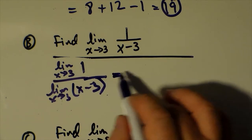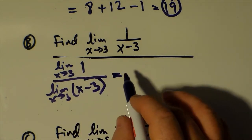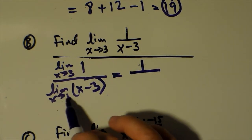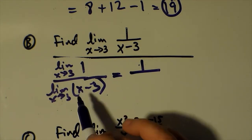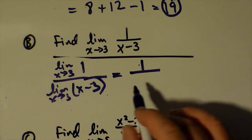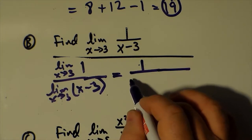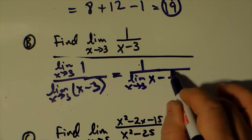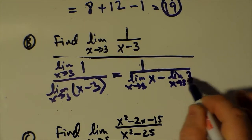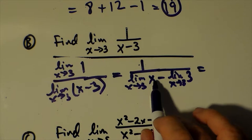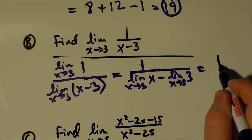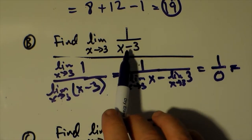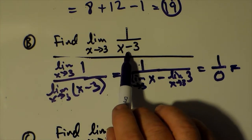The limit of a constant is just the constant regardless of what x is approaching, so the numerator is 1. On the bottom, the limit as x approaches 3 of x is 3 by direct substitution, and the limit of 3 is 3, so we get 1 over 3 minus 3, which is 1 over 0. This is the case of a vertical asymptote — we have a vertical asymptote at x equals 3 for this function.